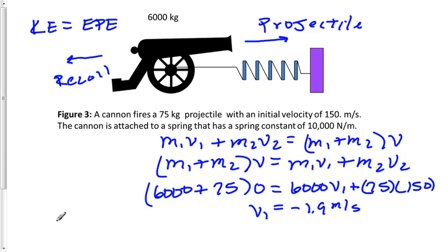So down here I'll write that equation. We'll have one-half, the mass is 6,000 for the cannon, velocity is negative 1.9 and we'll square that.